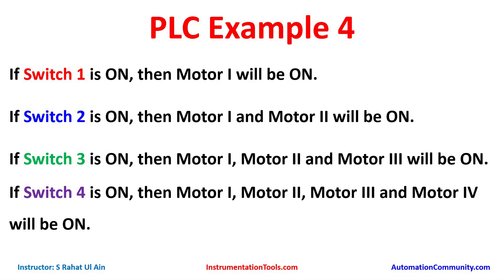For motor 1 to be on, switch 1 or switch 2 or switch 3 or switch 4 should be on — so motor 1 turns on if any switch is on. Motor 2 will be on if switch 2, switch 3, or switch 4 is on. For motor 3 to be on, either switch 3 or switch 4 should be on. For motor 4, only switch 4 will turn it on. For this example we will use normally open contacts and implement the OR logic gate.